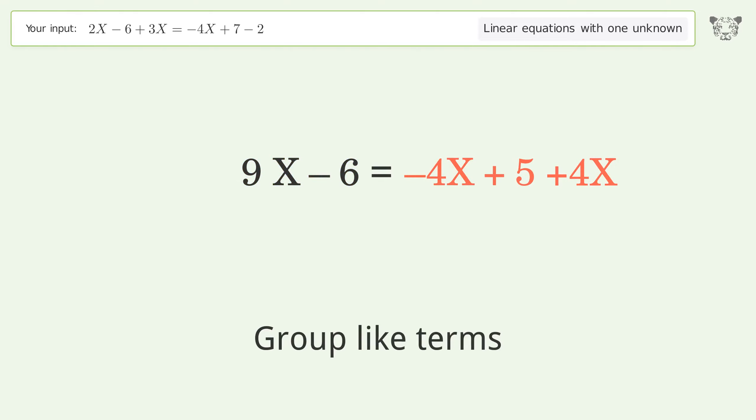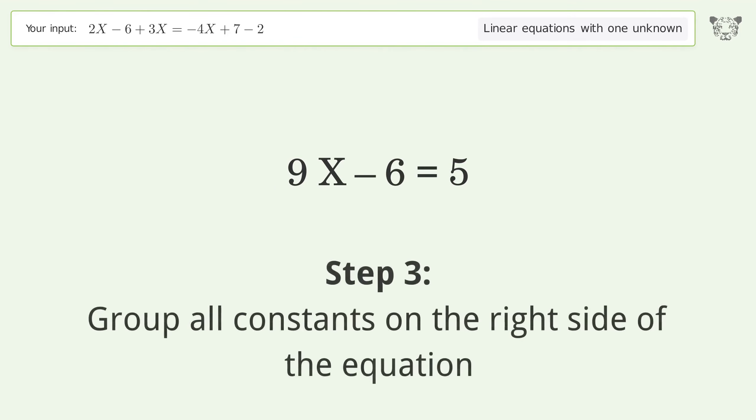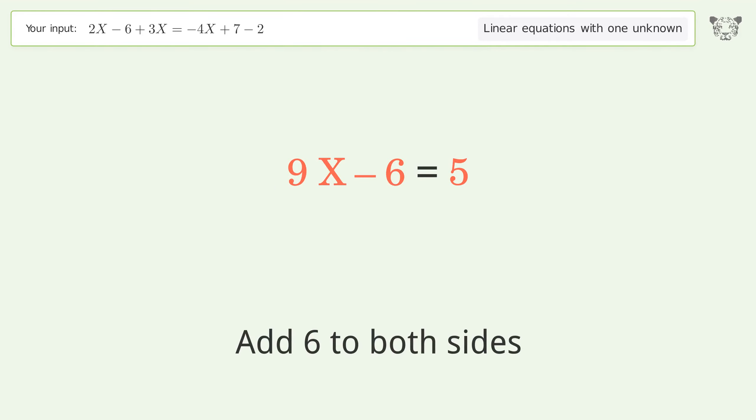Group like terms. Simplify the arithmetic. Group all constants on the right side of the equation. Add 6 to both sides. Simplify the arithmetic.